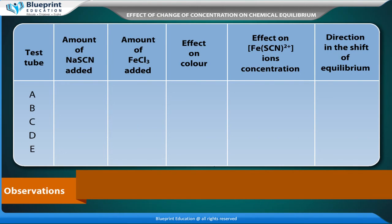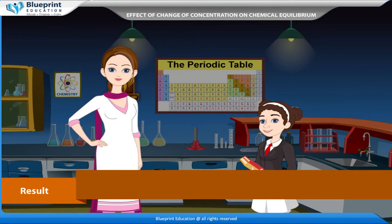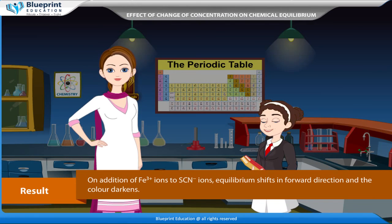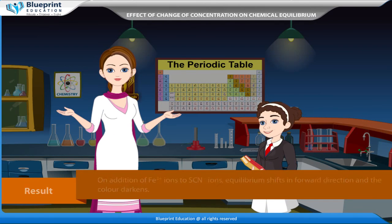Observations: Record in a table the amount of NaSCN added, amount of FeCl₃ added, effect on color, effect on FeSCN²⁺ ion concentration, and direction of the shift of equilibrium. On addition of Fe³⁺ ions to SCN⁻ ions, the equilibrium shifts in the forward direction and the color darkens.